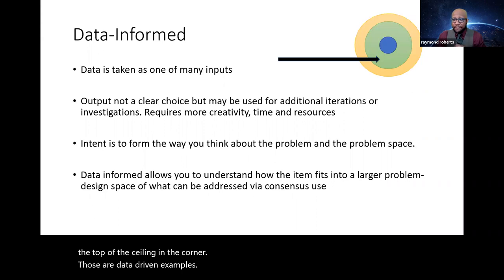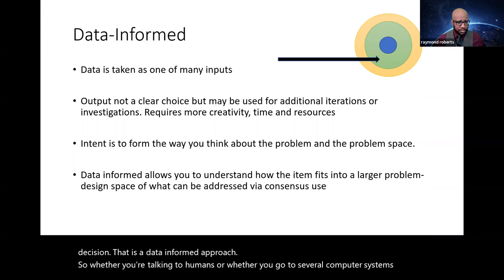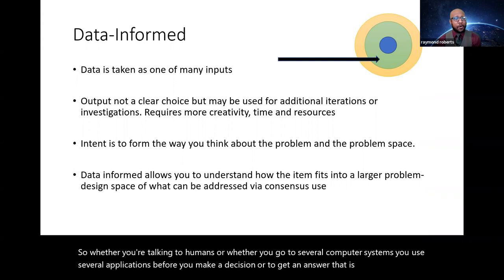Data-informed. Fast and furious, this is whenever you have a solution where you ask more than one place for the answer. So let's say you are the boss at the company, and you have a board, and you ask your board a question. If you're not just asking one person, you're getting input from everyone to make your decision. That is a data-informed approach. So whether you're talking to humans, or whether you go to several computer systems, you use several applications before you make a decision, or to get an answer, that is data-informed. You're going to more than one place to get the answer.